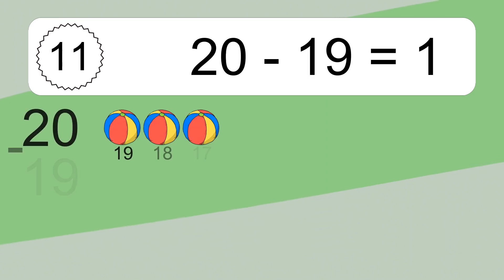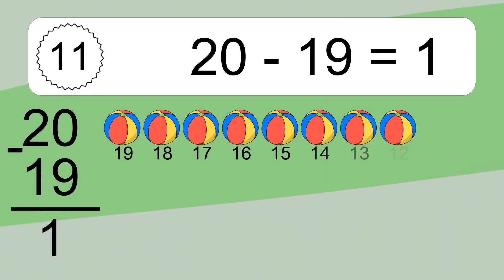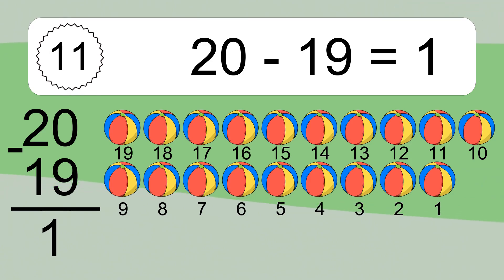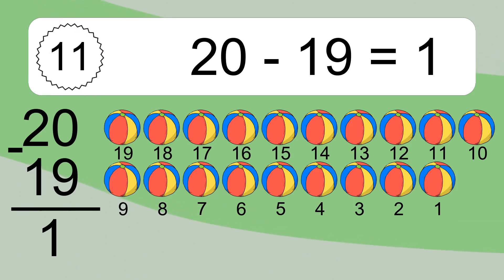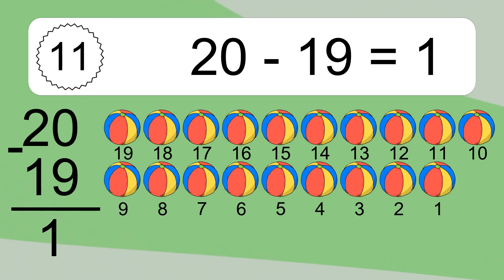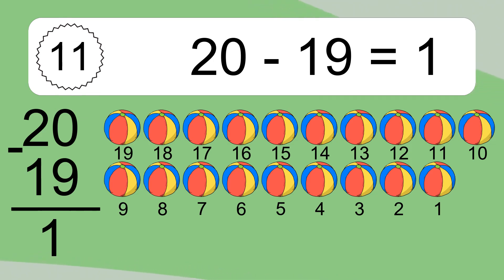20 minus 19 equals what? 20 minus 19 equals 1. Let's count it! 19, 18, 17, 16, 15, 14, 13, 12, 11, 10, 9, 8, 7, 6, 5, 4, 3, 2, 1.